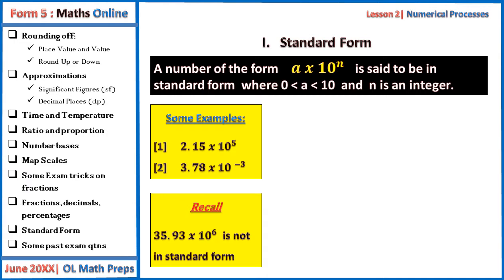Recall, 35.93 times 10 to the power 6 is not in standard form. The decimal point must be after the first digit, and that first digit should be a whole number.